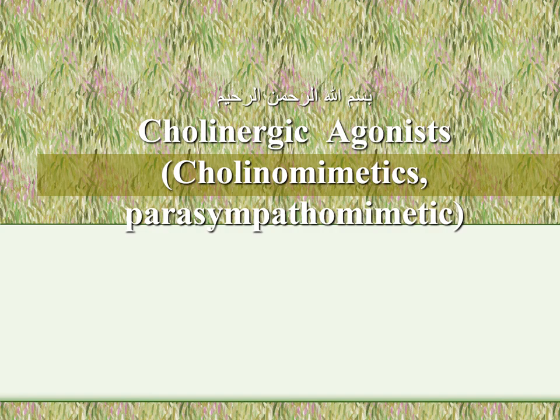After release, acetylcholine exerts its action on muscarinic or nicotinic receptors. Its action is then terminated by hydrolysis by the enzyme cholinesterase. There are two types of cholinesterase: acetylcholinesterase (true cholinesterase), which occurs on neurons, and butyrylcholinesterase (pseudo-cholinesterase), which occurs in the plasma. We also talked about acetylcholine receptors, which are of two types: muscarinic and nicotinic.